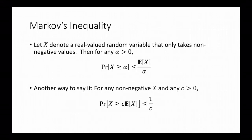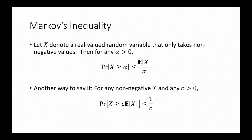So let's start with Markov's inequality. Suppose that x is a real-valued random variable that only takes non-negative values. Then, for any alpha greater than 0, the probability that x is greater than or equal to alpha is at most the expectation of x divided by alpha. Another way to say it is: for any non-negative x and any c greater than 0, the probability that x is greater than or equal to c times its expectation is at most 1 divided by c.